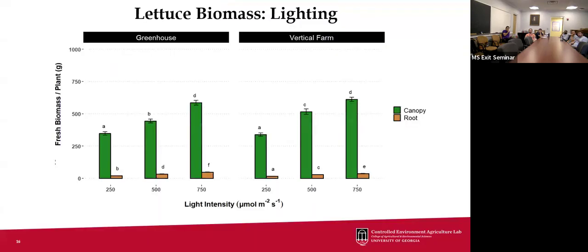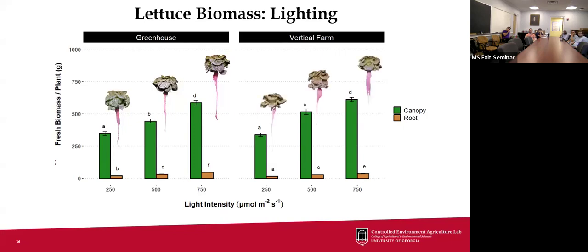Chapter one focuses on the lettuce results. Looking at fresh biomass per plant in the greenhouse trial, we saw significant differences in above-ground yield for every increase in light intensity, and the same trend held for root biomass. In the vertical farm we saw a similar trend, but the 500 µmol PPFD treatment showed significantly higher yield compared to 500 µmol PPFD grown in the greenhouse. We also saw less root biomass accumulation overall in the vertical farm.